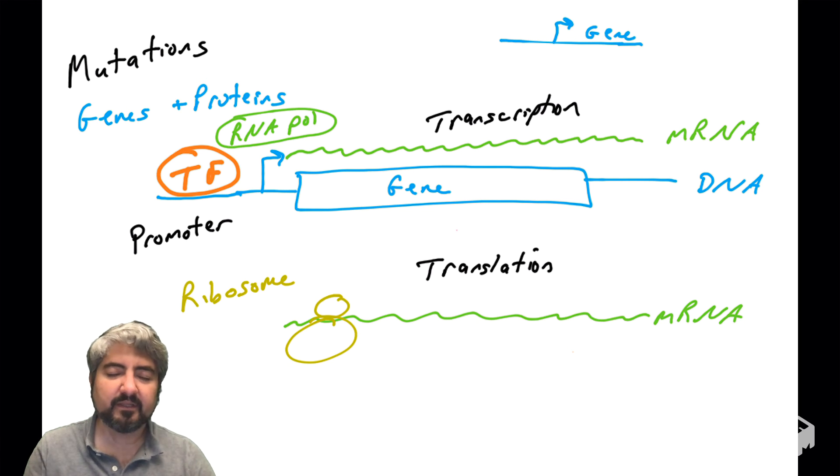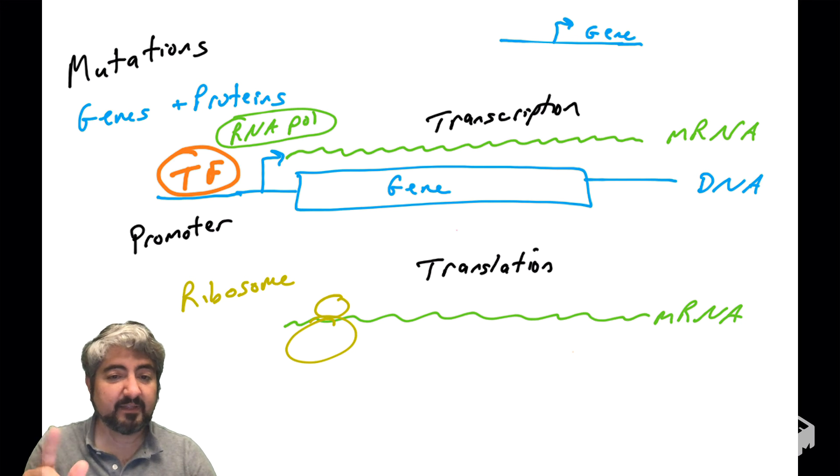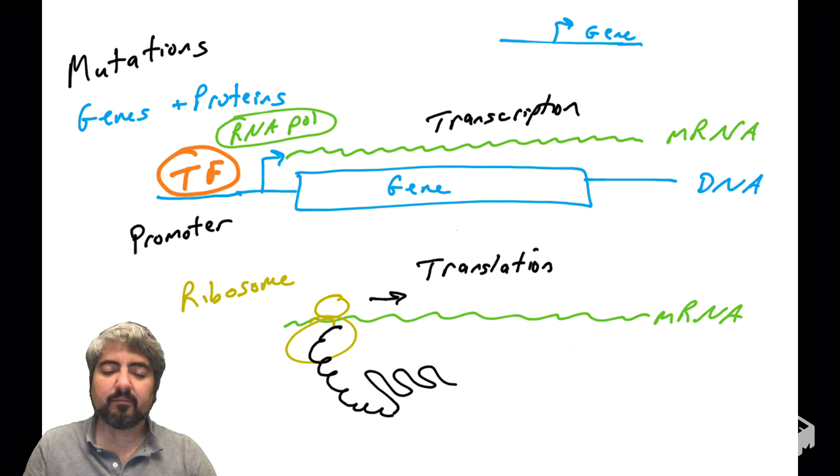All right. So there are free-floating ribosomes in the cytoplasm, also ribosomes attached to an ER. That's the rough ER. And then the ribosome will translate the information in the mRNA by reading the codons and thus producing amino acids linked together into a polypeptide chain, folds into a protein.